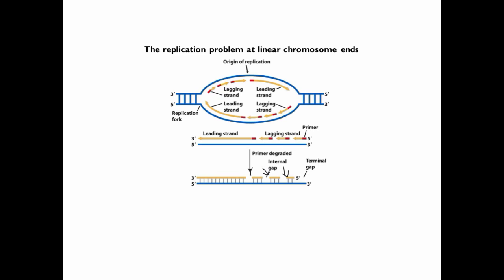However, in the context of a linear chromosome, at the very end of that linear chromosome, where the primer has been removed, there is no 3' hydroxyl to which nucleotides can be added onto by DNA polymerase. And so this then creates a 3' overhang at the very end of a chromosome, which we call a telomere.